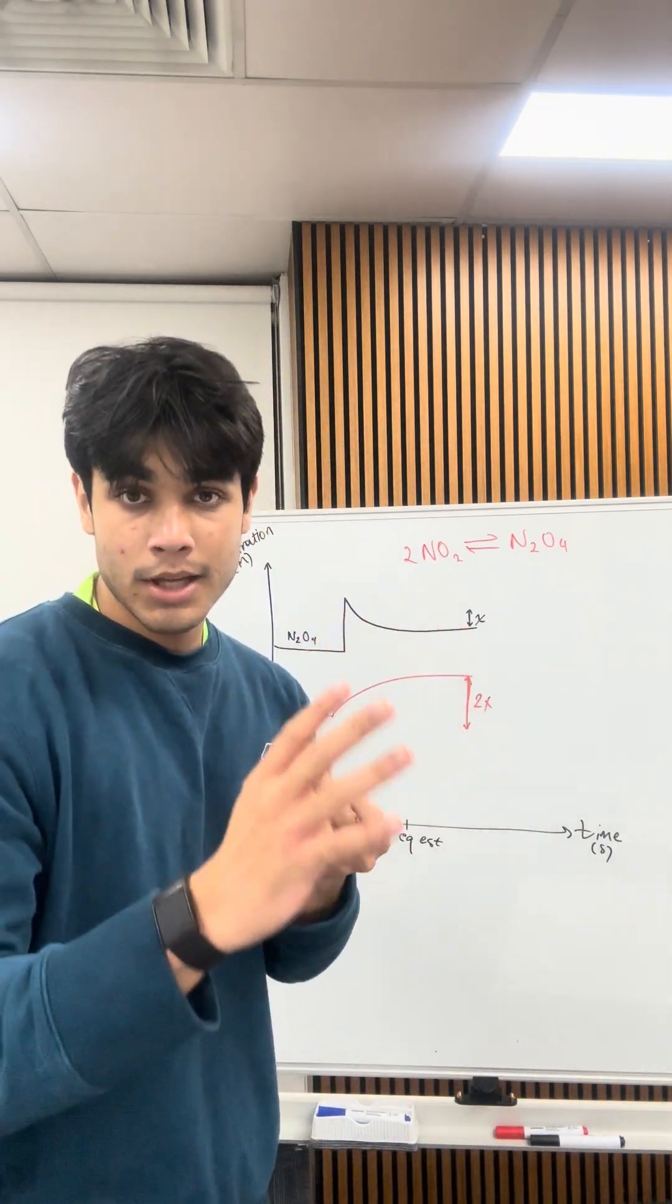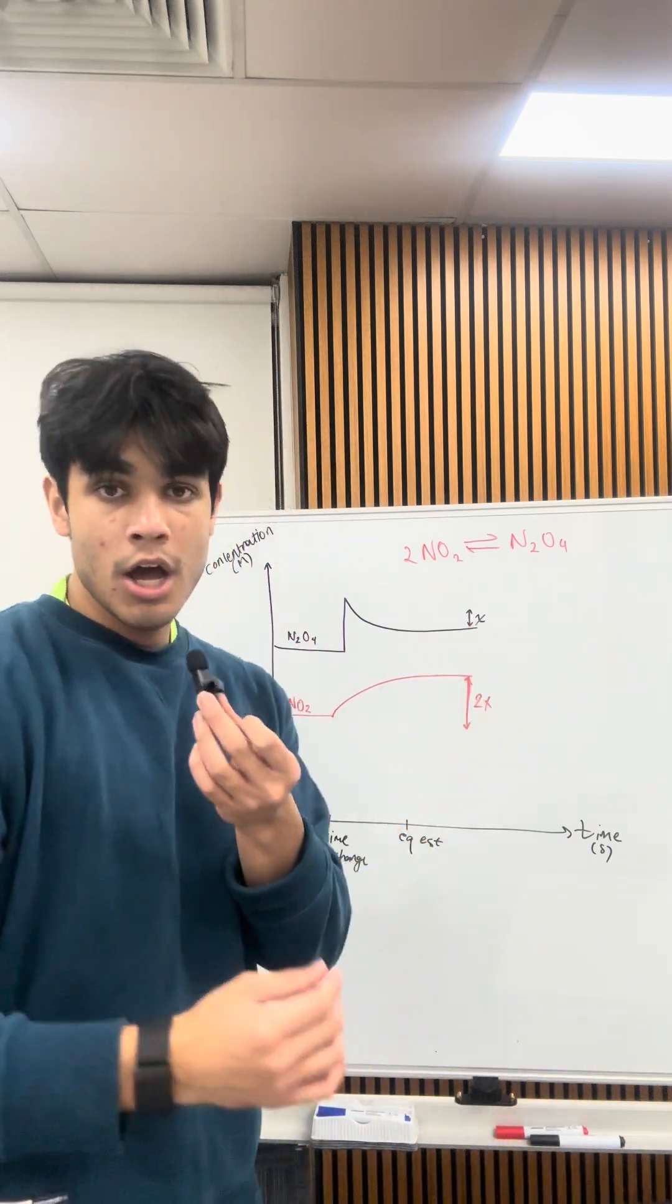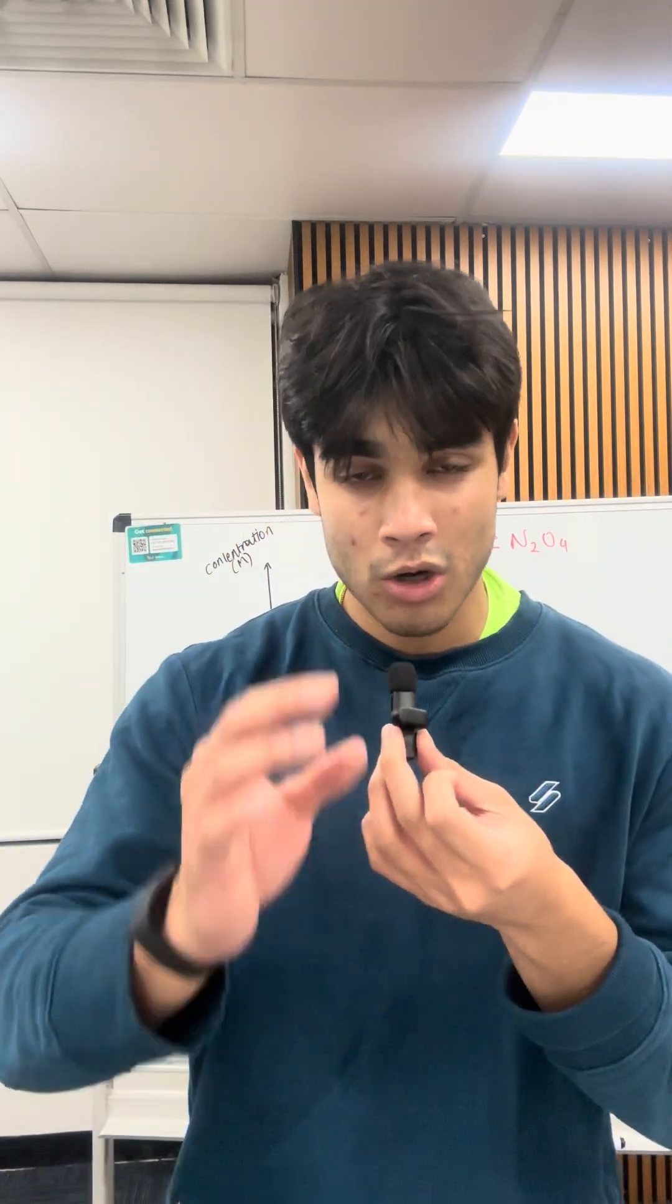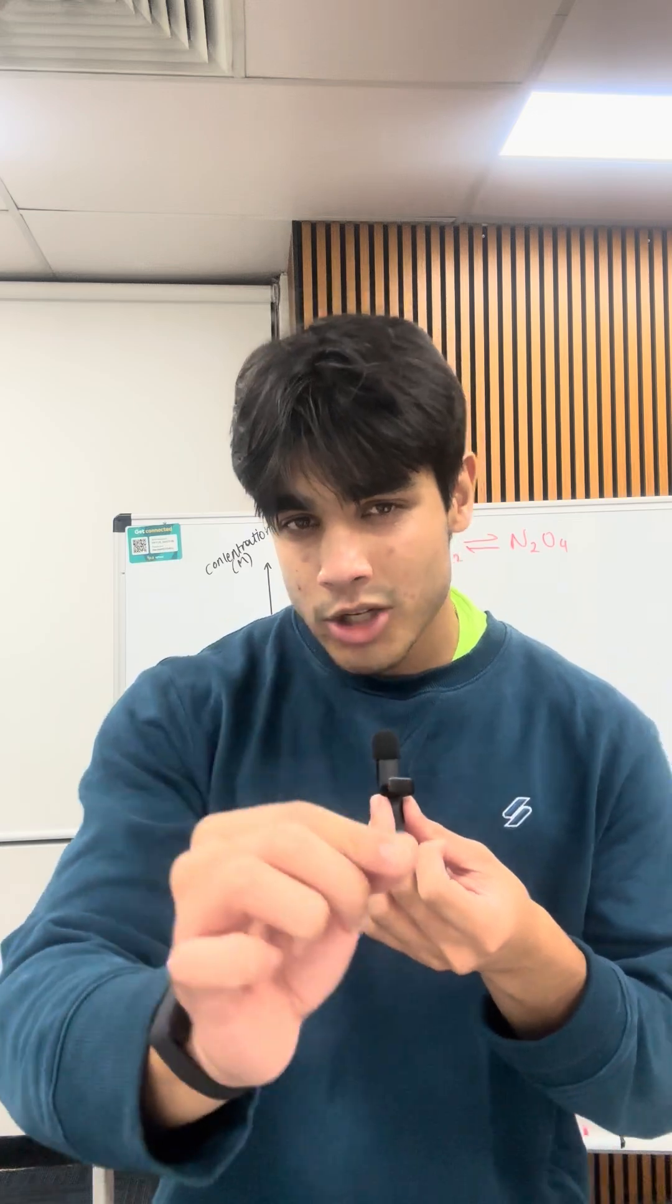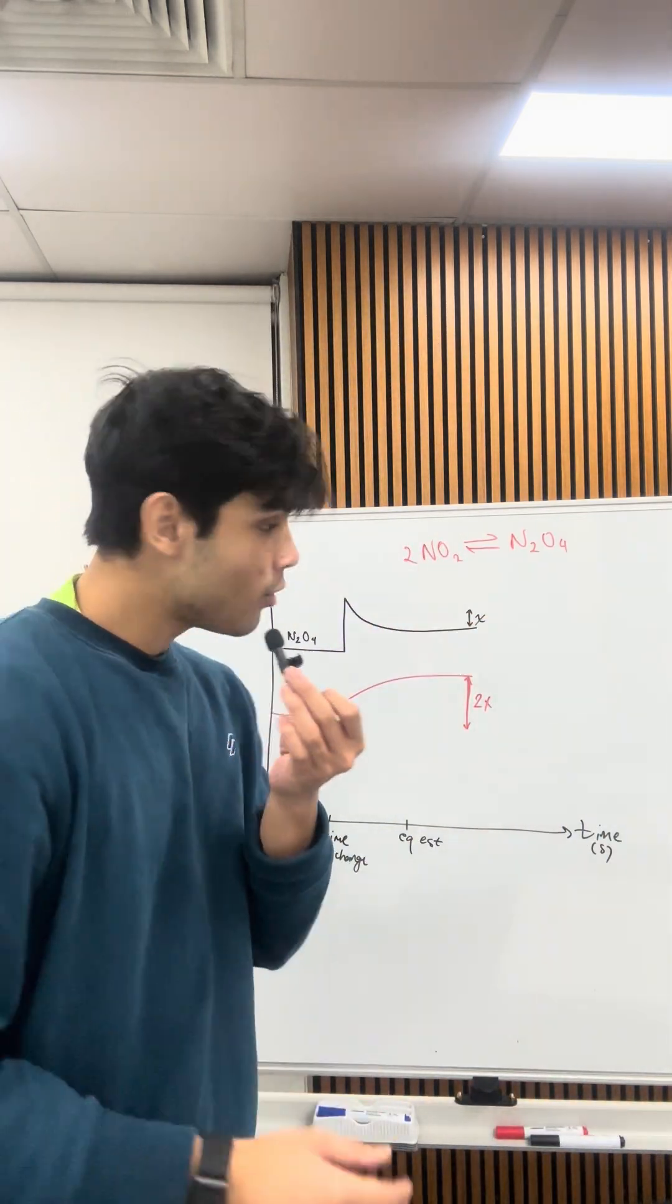The next thing is labeling the actual changes. Your changes should model the stoichiometric ratios present in the actual question. Therefore, if I've got NO2 and N2O4,